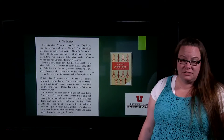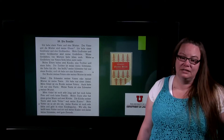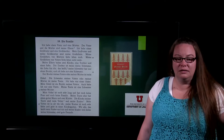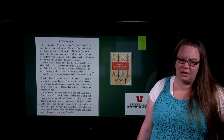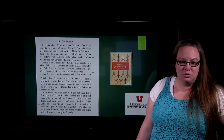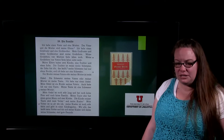Ich habe einen Vater und eine Mutter. Der Vater und die Mutter sind meine Eltern. Ich habe einen Großvater und eine Großmutter. Mein Großvater und meine Großmutter sind meine Großeltern. Meine Großeltern von Mutterseite leben noch. Meine Großeltern von Vaterseite leben nicht mehr. Meine Eltern haben zwei Kinder — eine Tochter und einen Sohn. Die Tochter ist meine kleine Schwester. Der Sohn bin ich. Das heißt, meine Schwester hat nur einen Bruder und ich habe nur eine Schwester. Der Bruder meines Vaters oder meine Mutter ist mein Onkel. Die Schwester meines Vaters oder meine Mutter ist meine Tante. Ich habe nur einen Onkel.